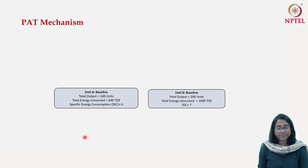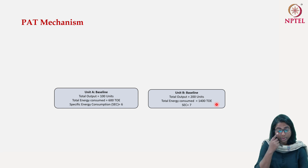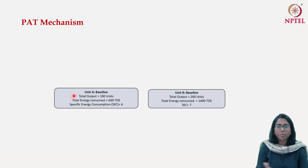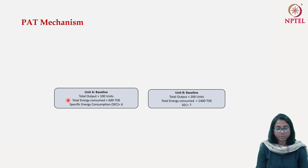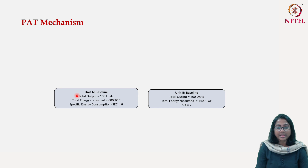Think about two industrial units — Unit A and Unit B. Unit A is producing 100 units of output and its total energy consumed is 600 tons of oil equivalent. The specific energy consumption, which is a measure of energy intensity, is 600 divided by 100, giving an SEC of 6. For Unit B, the baseline scenario has an output of 200 units, total energy consumed of 1400 tons of oil equivalent, and therefore specific energy consumption is 1400 divided by 200, which equals 7.